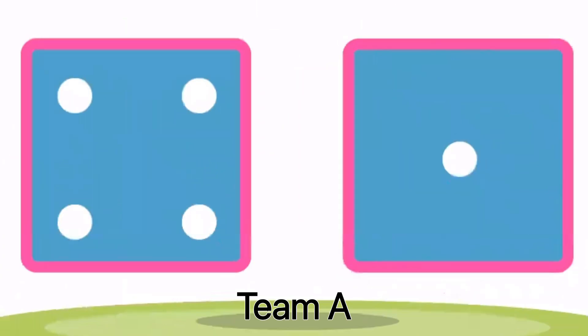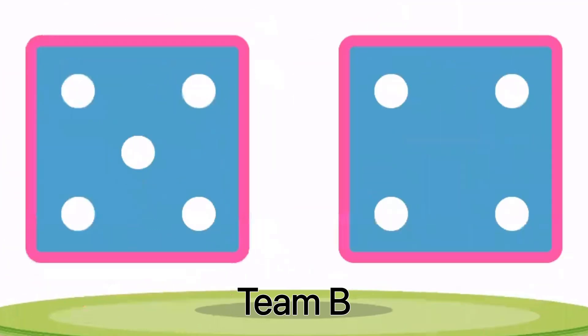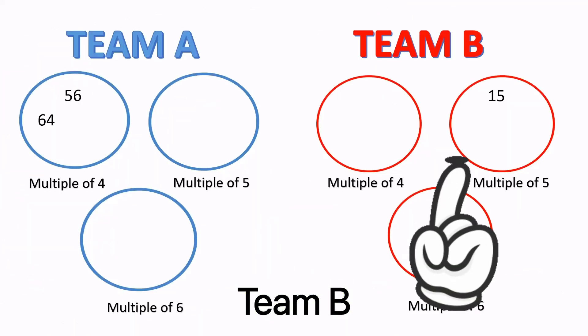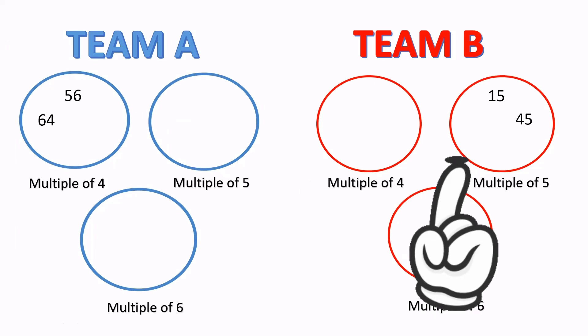Ready for round three. Four and one — we cannot use fourteen or forty-one since it's not a multiple of either four, five, or six. Forty-five can be written in the circle of five.